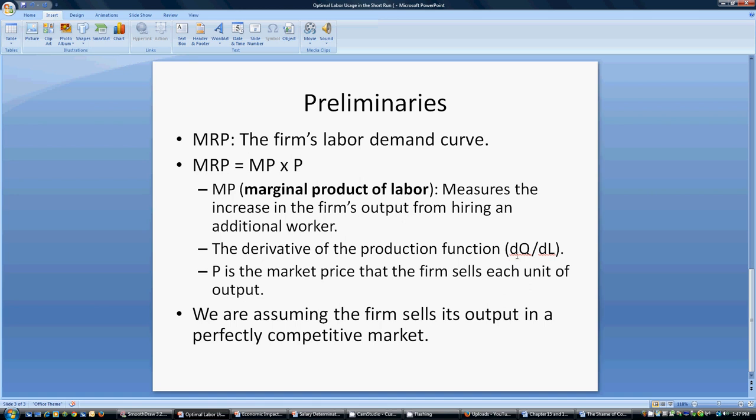And as a derivative, it's just represented by the following expression here, derivative of the quantity of output, the production function, with respect to units of labor, L. P, in this formulation, is the market price that the firm sells each unit of output for. We're going to assume that the firm sells its output in a perfectly competitive market. Therefore, the firm is a price taker.